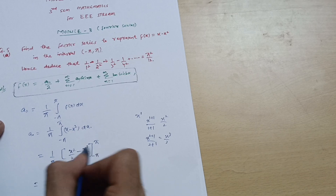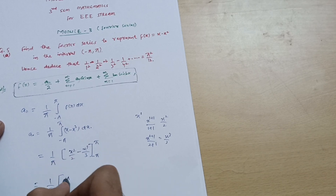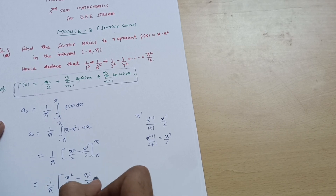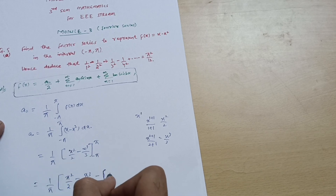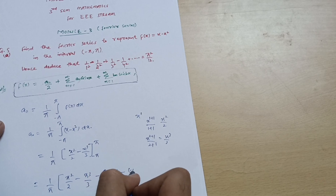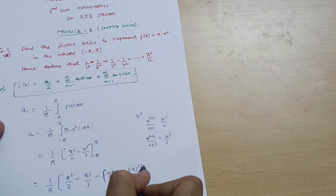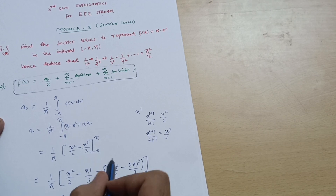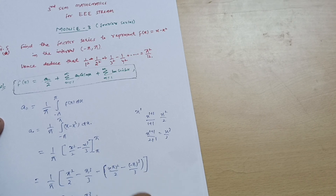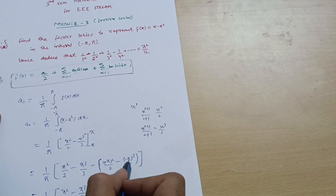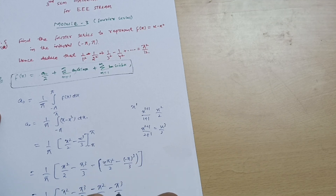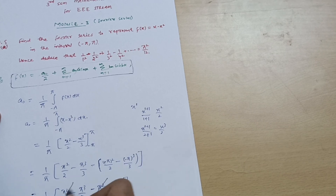Applying the limits — upper limit first: substituting x = π gives π²/2 − π³/3. Then substituting the lower limit x = −π gives (−π)²/2 − (−π)³/3, which is π²/2 + π³/3. Now taking upper minus lower: π²/2 − π²/2 cancels, leaving 2π³/3 multiplied by 1/π.